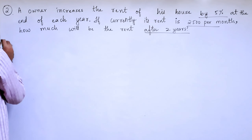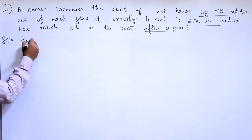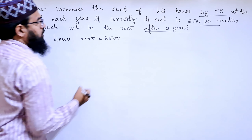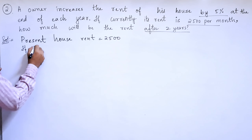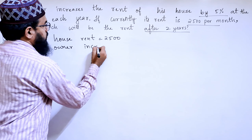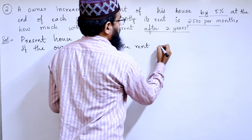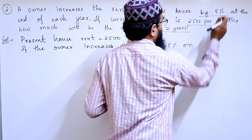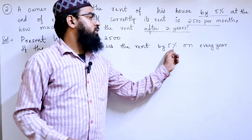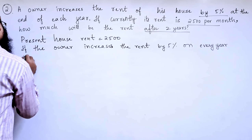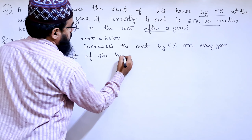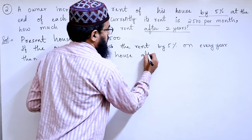Let's start the solution. The present house rent is equal to ₹2,500 rupees. The owner is increasing the rent by 5% every year, so we need to find the rent of the house after two years.